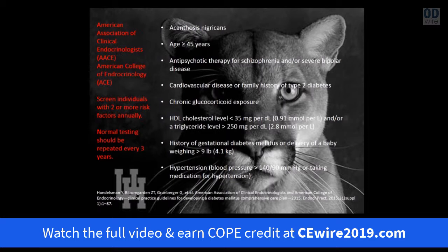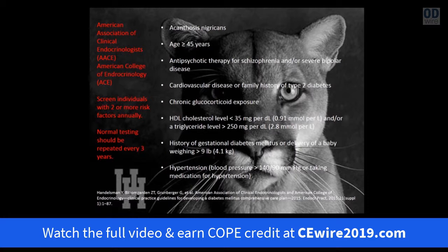The American Association of Clinical Endocrinologists and American College of Endocrinology recommend screening individuals with two or more risk factors annually. Their risk factors include acanthosis nigricans, age 45 or older, antipsychotic therapy for schizophrenia or severe bipolar disease, cardiovascular disease, family history of type 2 diabetes, chronic glucocorticoid exposure, HDL less than 35 mg/dL, triglycerides greater than 250 mg/dL, history of gestational diabetes or delivery of a baby over nine pounds, and hypertension greater than 140/90 or on medications. Normal initial results should be repeated every three years.